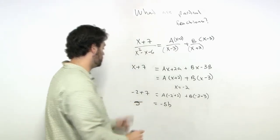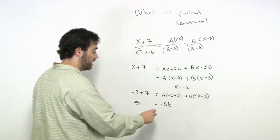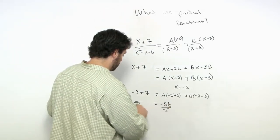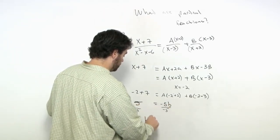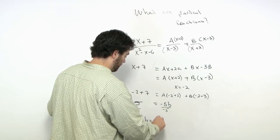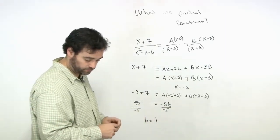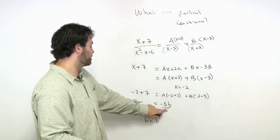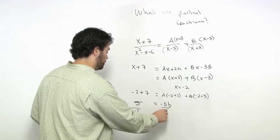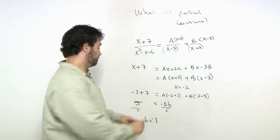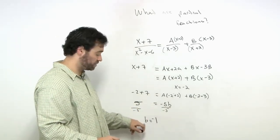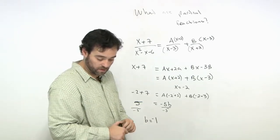On the right side, -2 + 7 = 5. Solving for B, we divide both sides: 5 = -5B, so positive 5 divided by negative 5 gives us B = -1.